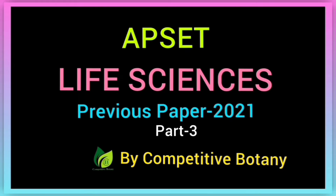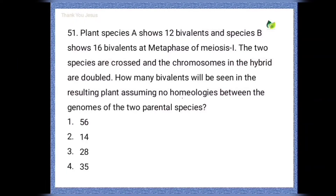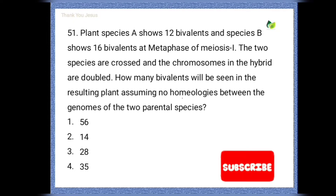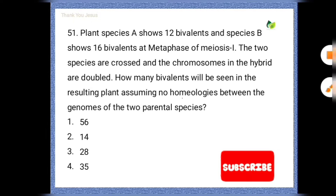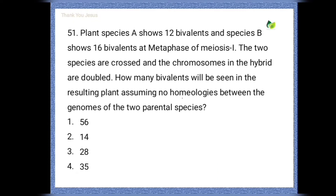Plant species A shows 12 bivalents and species B shows 16 bivalents at metaphase of meiosis 1. The two species are crossed and the chromosomes in the hybrid are doubled. How many bivalents will be seen in the resulting plant, assuming no homology between the genomes of the two parental species? The correct option is 28.